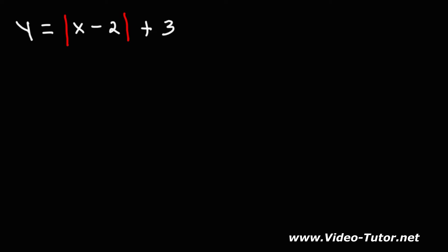In this video, we're going to talk about how to find the vertex and the axis of symmetry for an absolute value function. So first, we're going to set the inside part equal to zero. We'll solve for x. If you add 2 to both sides, you get x is equal to 2. So this is the axis of symmetry.